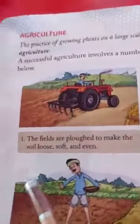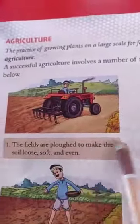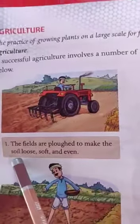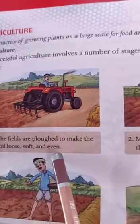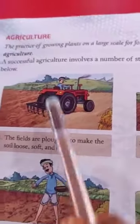The different stages are given below. First stage: the fields are plowed to make the soil loose, soft and even.